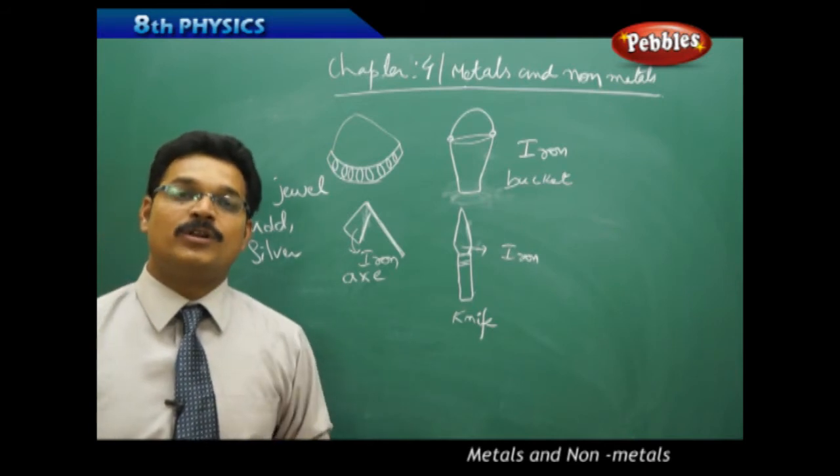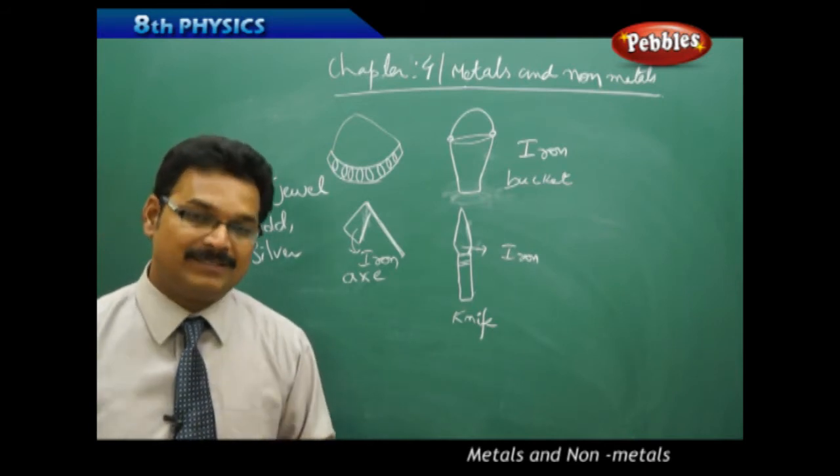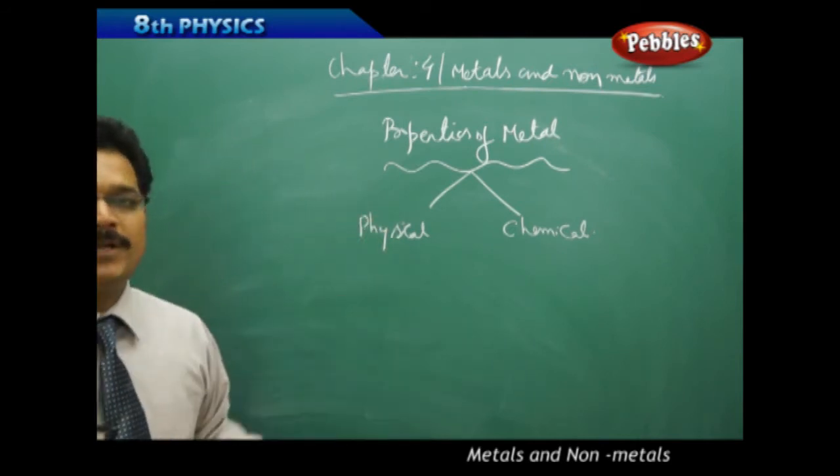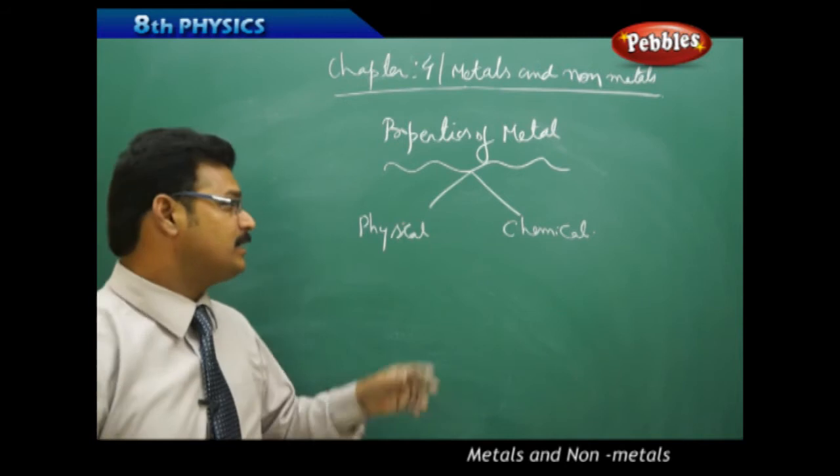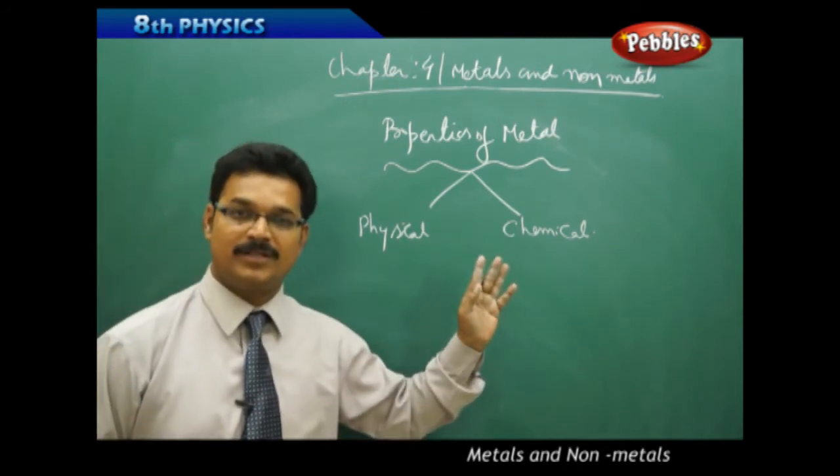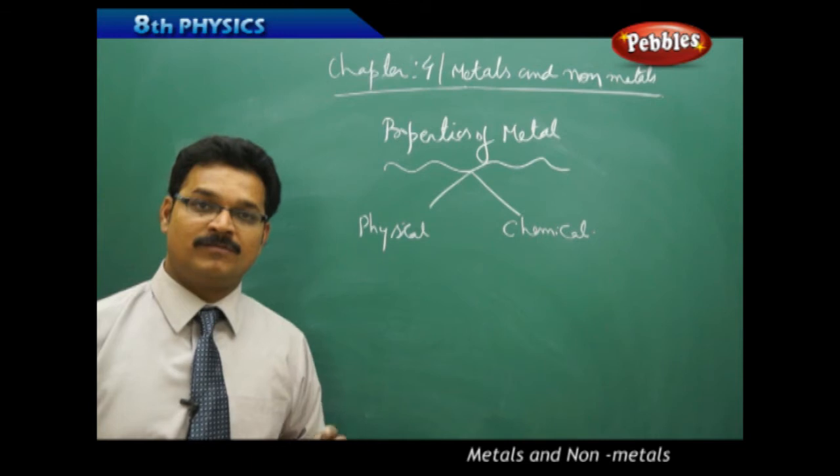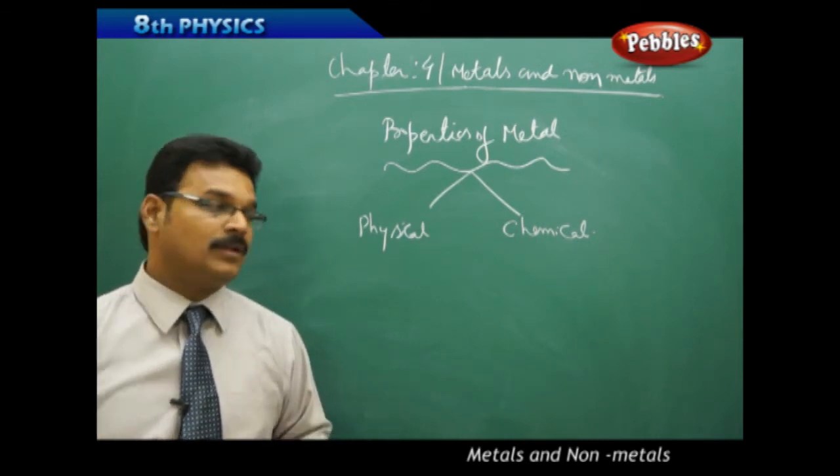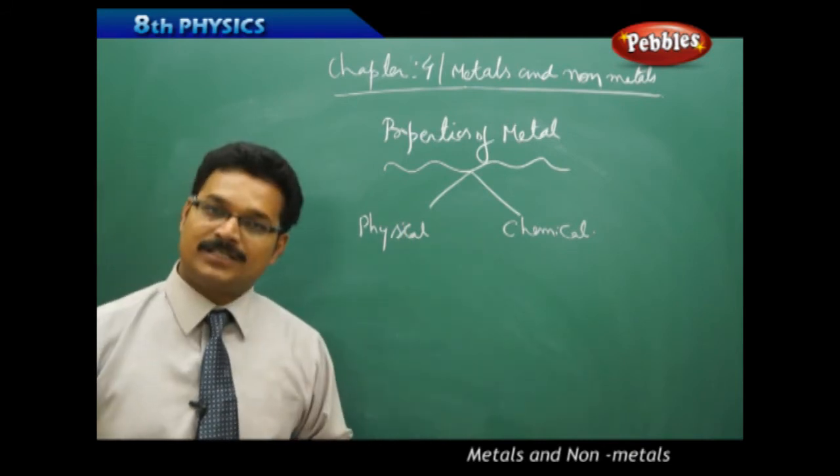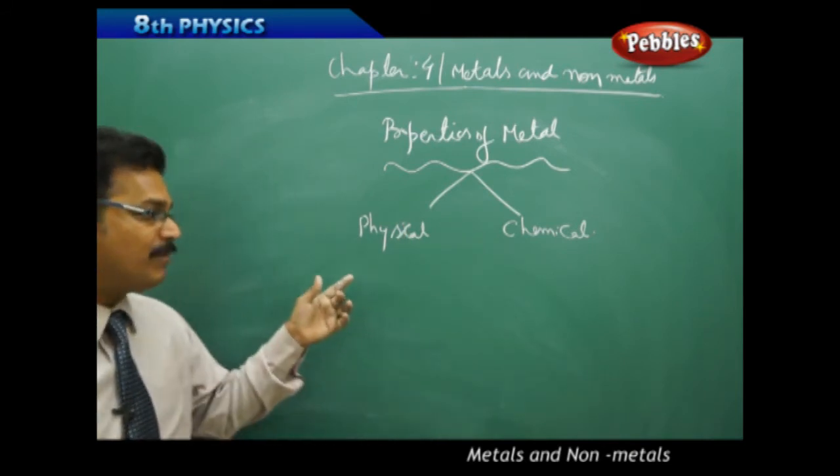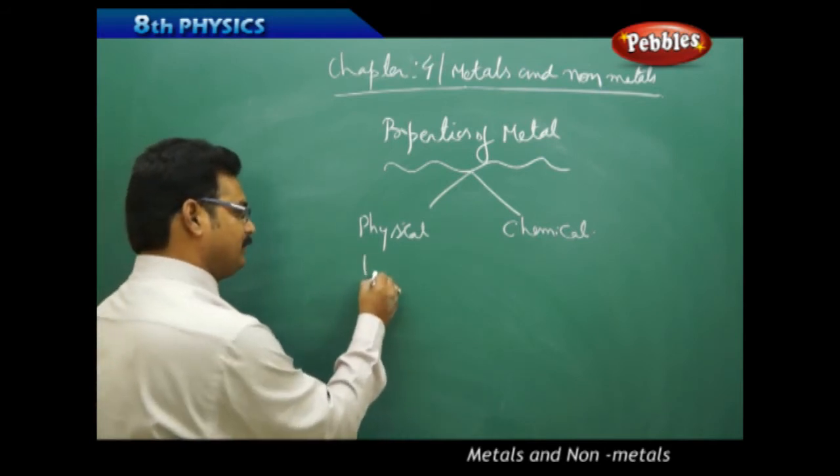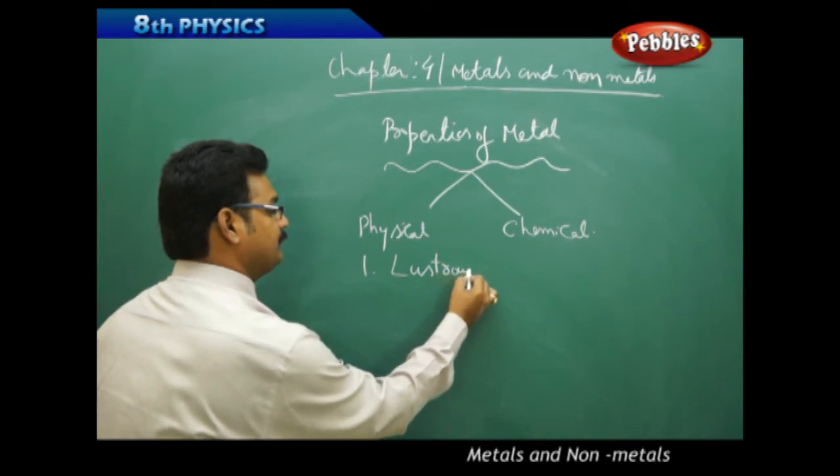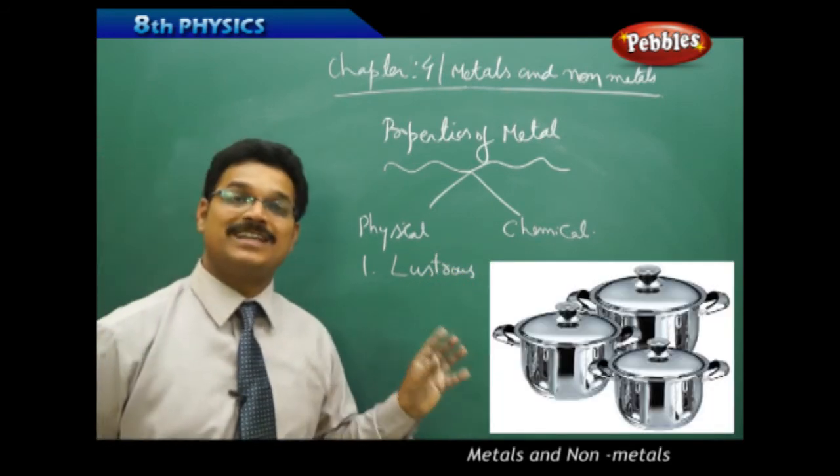Let me tell you about different properties of metals. Properties of metals are basically two types: physical properties and chemical properties. Physical properties means these properties we're able to see and observe. Chemical properties we'll discuss later. In physical properties, the first property is lustrous.